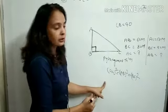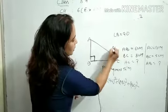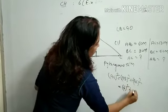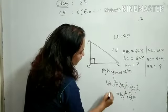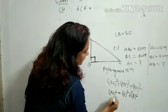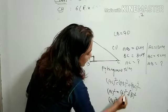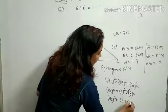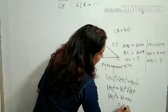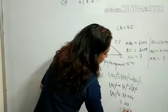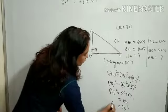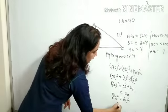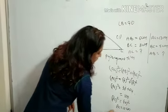In part one, AB = 6 and BC = 8 are given; find AC. So AC² = 6² + 8² = 36 + 64 = 100. We know 100 = 10². So AC² = 10², which means AC = 10 cm.